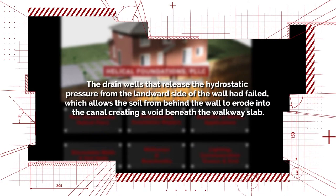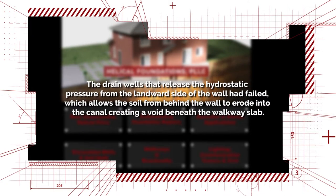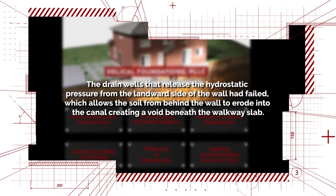The drain wells that released the hydrostatic pressure from the landward side of the wall had failed, which allows the soil from behind the wall to erode into the canal, creating a void beneath the walkway slab.